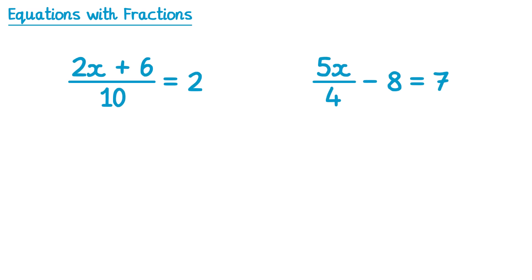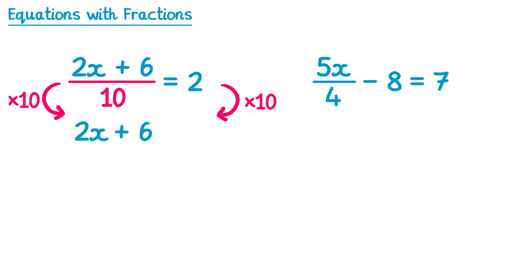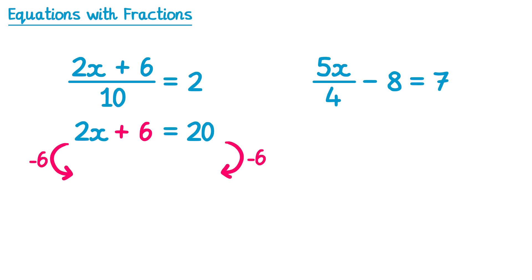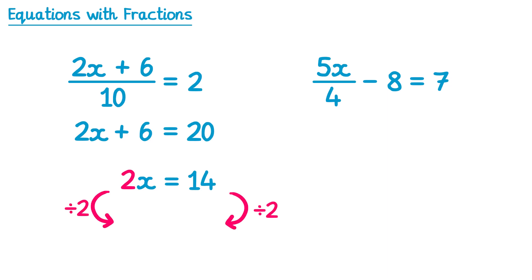Now we'll look at two final equations with fractions — these are slightly harder because there's a number in front of x. Starting with the one on the left, we deal with the divide by 10 by multiplying by 10 on both sides. The 10s cancel on the left, leaving 2x plus 6, and on the right 2 multiplied by 10 is 20. We subtract 6 from both sides, leaving 2x = 14. Finally, dividing by 2 gives x equals 7. This took an extra step because of the coefficient on x.